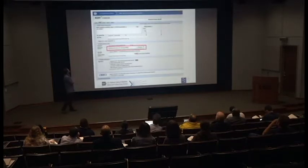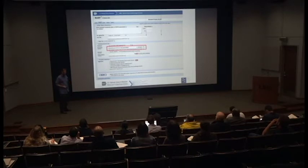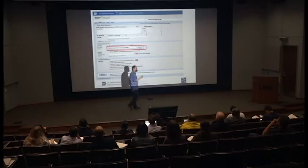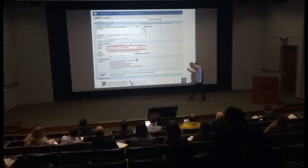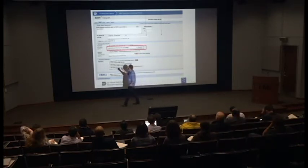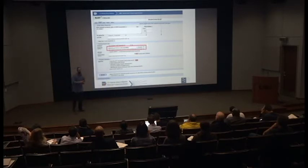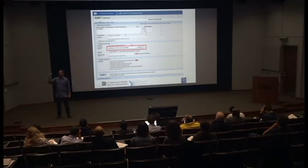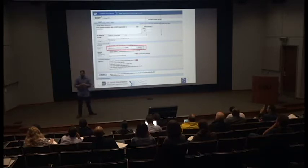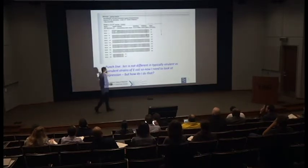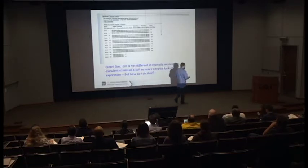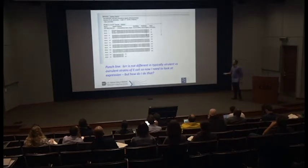I do a BLAST search and I can select my organism online. In the last release of BLAST, we made it possible to filter for your organism of interest in command line BLAST, which is really nice. You can select your organism in NR or NT and BLAST for that. I look and I ask: is LsrR in MG1655 different than Sakai? No — it's exactly the same. The punchline is that it's not different, so I probably want to look at expression of this gene in the MG1655 system.